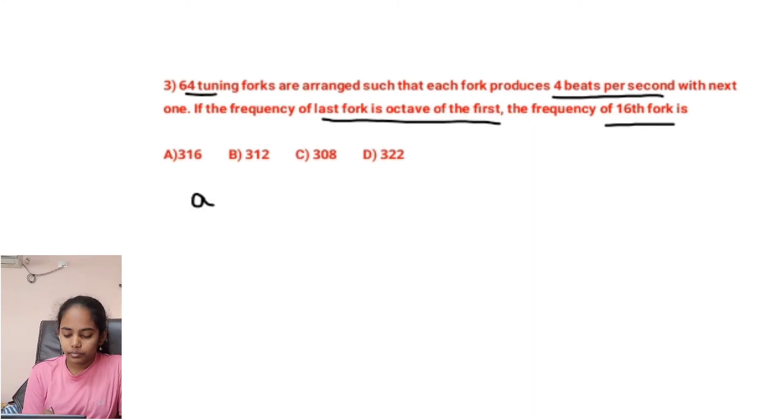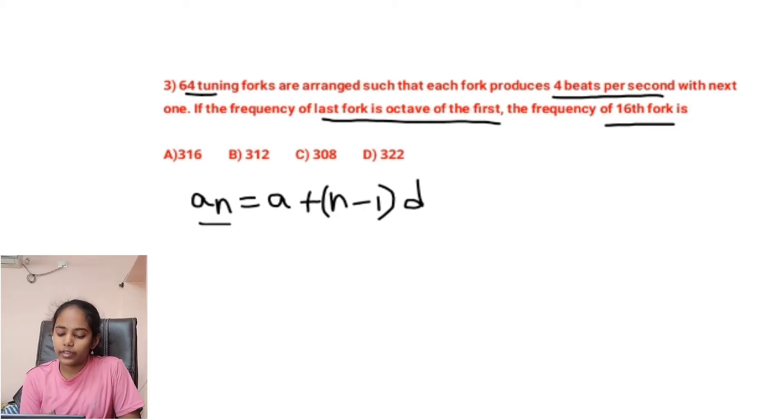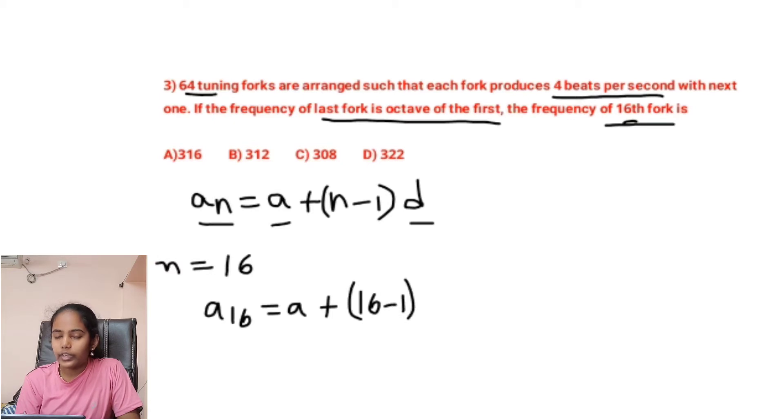That is aₙ = a + (n - 1) × d. Here aₙ is the nth term, a is the first term, d is the difference, and here you have to find the frequency of the 16th fork. So here our n becomes 16. So our equation becomes a₁₆ = a + (16 - 1). Here d is our beat frequency, that is 4.